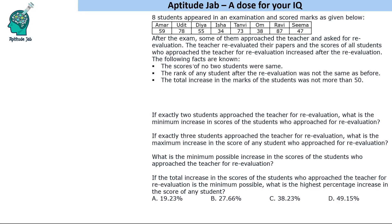The following facts are given: the scores of no two students were the same, so all had distinct scores. The rank of any student after the re-evaluation was not the same as before, so all their rankings will also change. The total increase in the marks of the students was not more than 50, so the maximum total increase is 50.